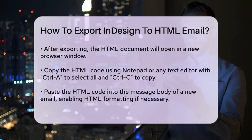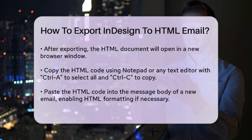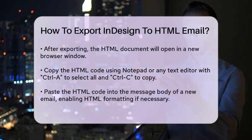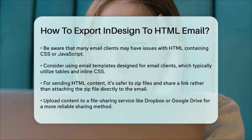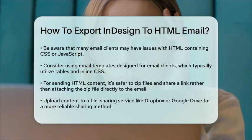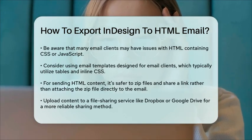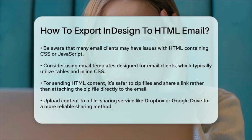To use this HTML in an email, paste the code into the message body of a new email. Depending on your email provider, you may need to enable HTML formatting. For example, in Gmail, you can switch to the HTML view when composing an email. However, many email clients have issues with HTML that includes CSS or JavaScript. To avoid this, you might want to use email templates specifically designed for email clients, such as those from Constant Contact, which use tables and inline CSS, making them more compatible with various email clients.